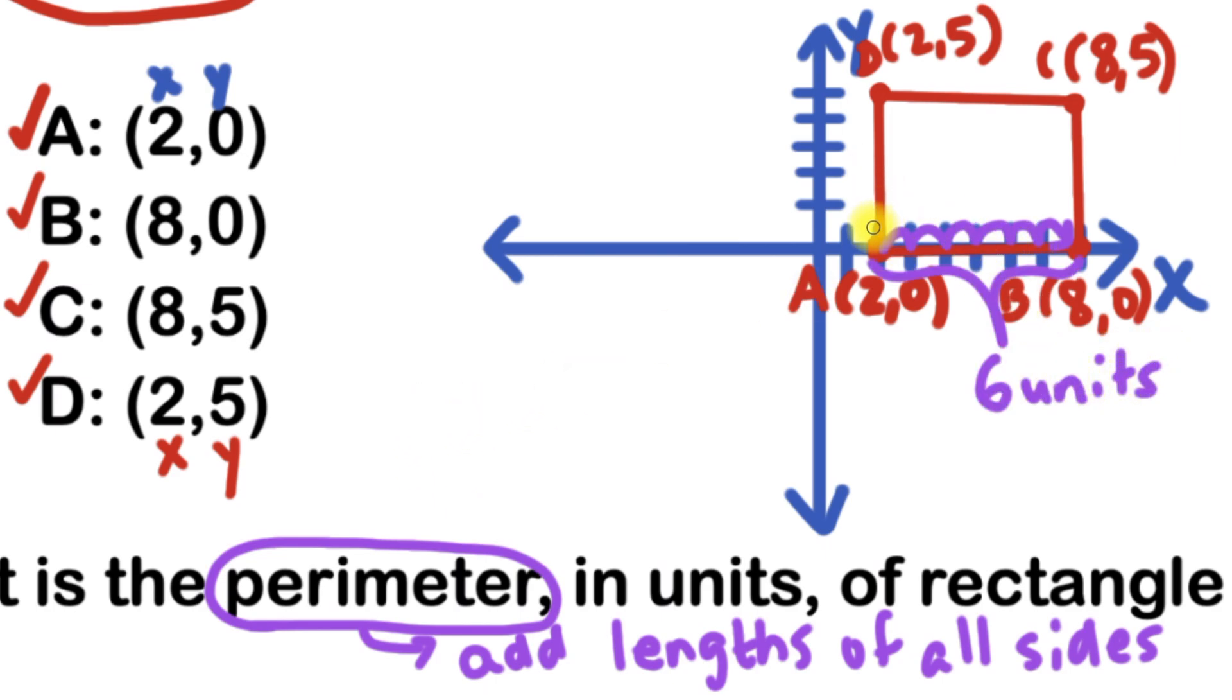And how high is it? And if we want to see how high the rectangle is, the width, we could just count from here, point A to here, point D. So we're going from zero on the y-axis to five. And if you don't know the distance from zero to five, you can always count it out in the rectangle. From here, it's one, two, three, four, five. So this rectangle is five units wide.